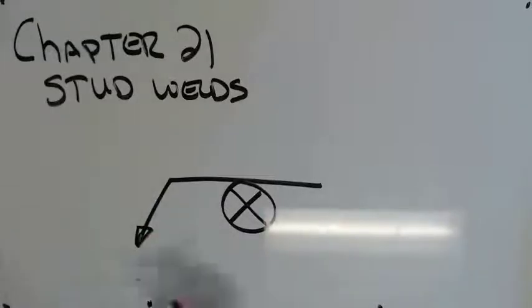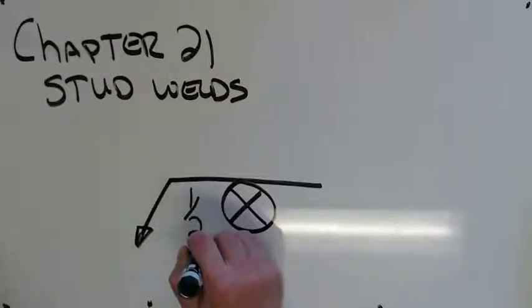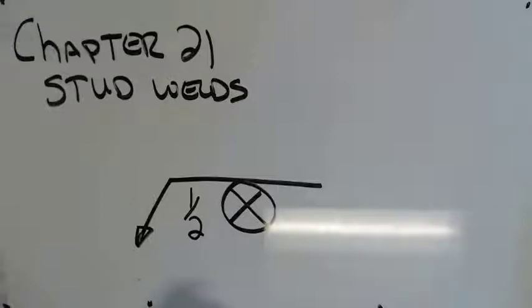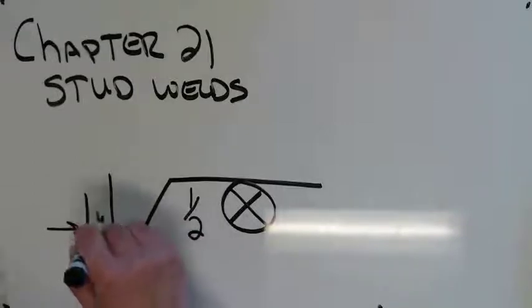What other information we can convey on a stud welding symbol? Well, we can talk about the size of the stud. In this case, not diameter, or not weld size, but actually stud diameter. So that's going to be a half an inch stud. One half inch diameter stud.